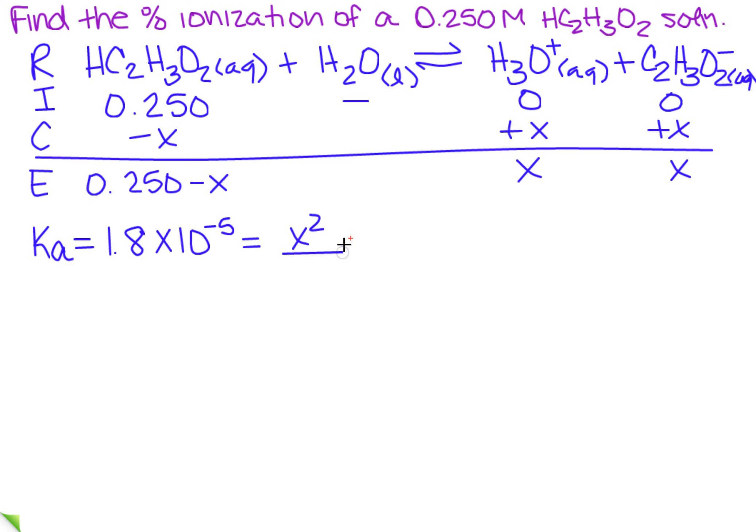And then I've got x squared, and since we're doing percent ionization, I'm going to do the approximation. So instead of the 0.250 minus x, I'm just going to do 0.250.